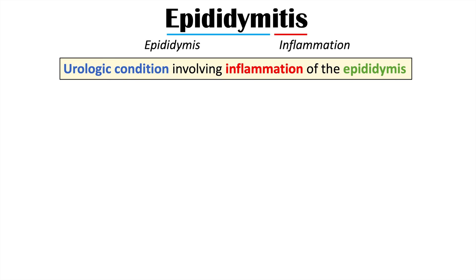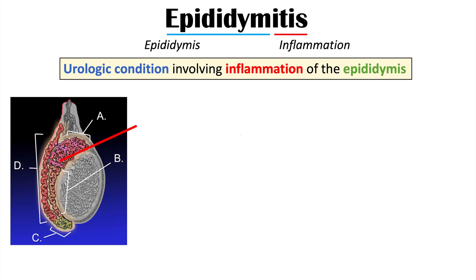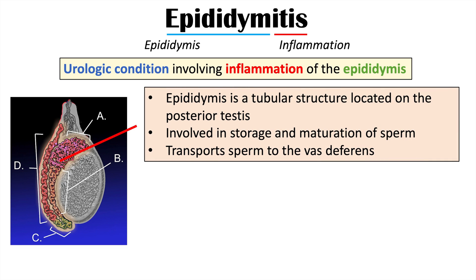So what is epididymitis? Looking at the word, the prefix 'epididym' refers to the epididymis, and 'itis' refers to inflammation. So it is a urologic condition involving inflammation of the epididymis. The epididymis is a tubular structure located on the posterior testis, involved in storage and maturation of sperm, and it serves as a conduit for transport of sperm to the vas deferens.